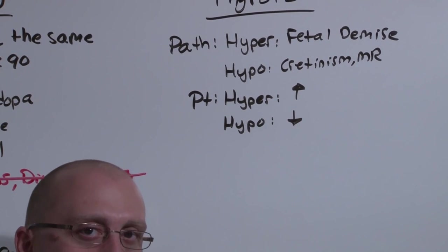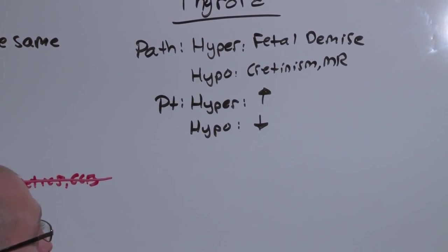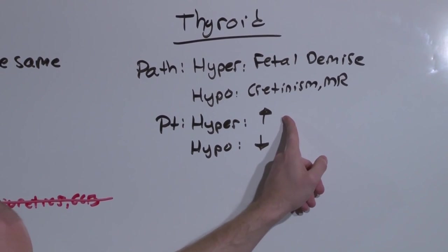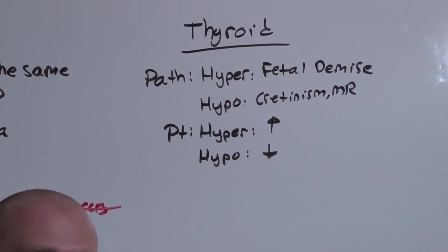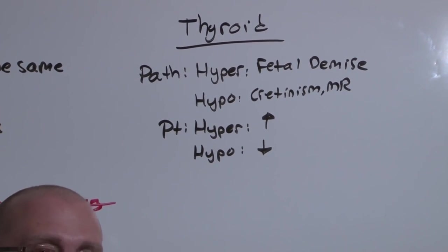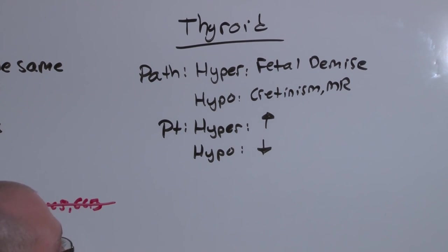So when the patient is hyperthyroid, they're going to have tachycardia, they're going to be burning energy, they're going to be hot when everyone else is cold. They'll have weight loss, diarrhea, maybe even a fib.